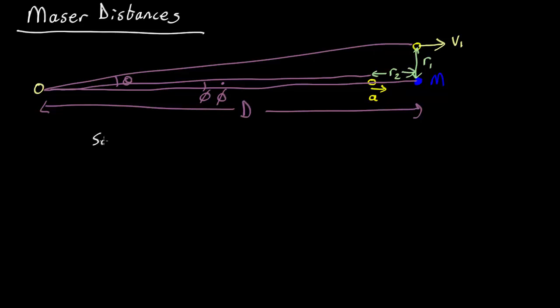So we know v1, theta, acceleration a, and phi dot. And what we want to work out is d, the distance from the Earth to this maser.